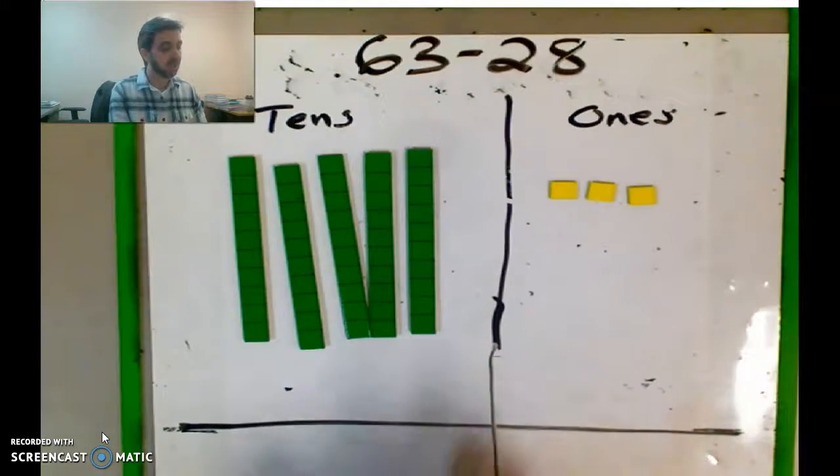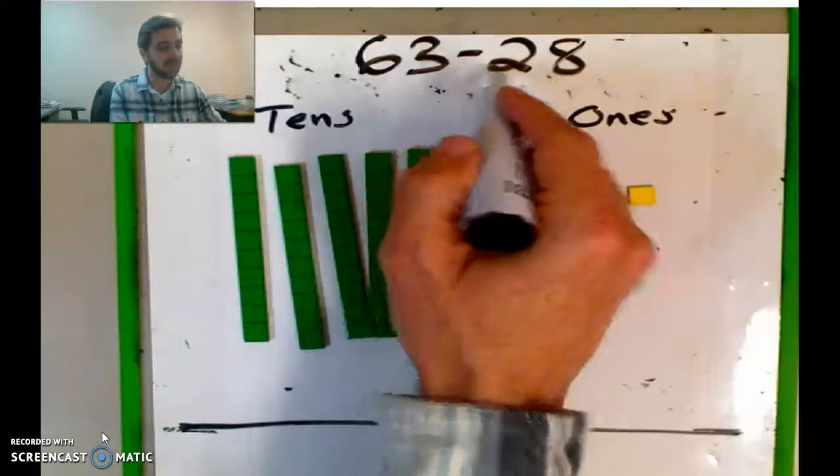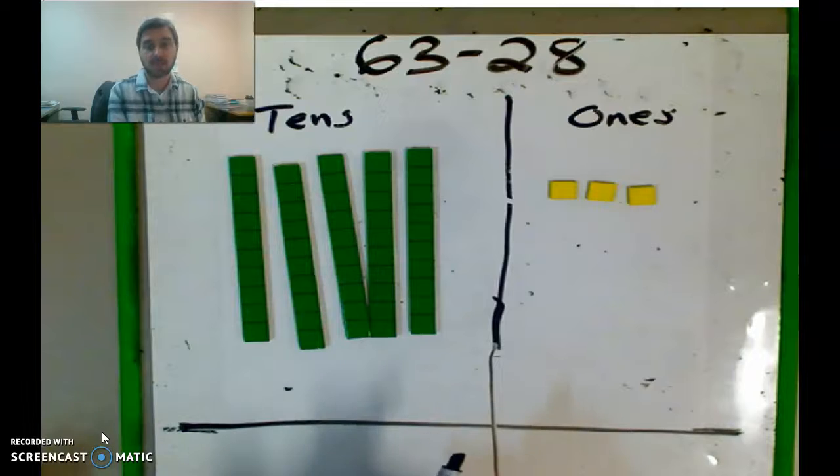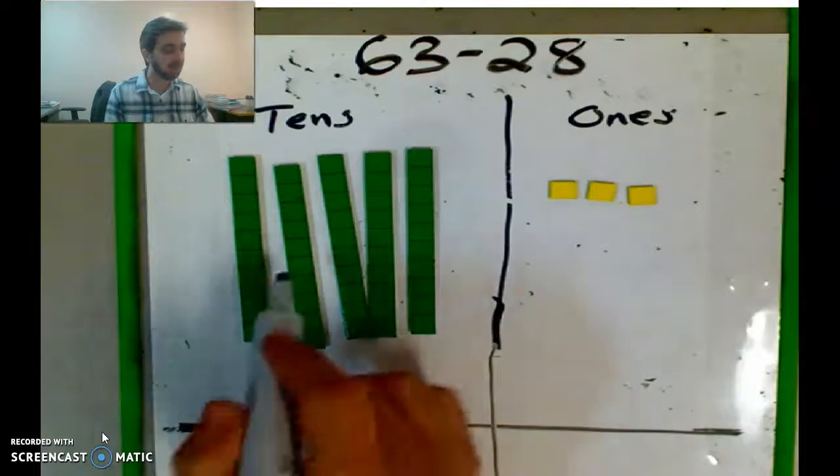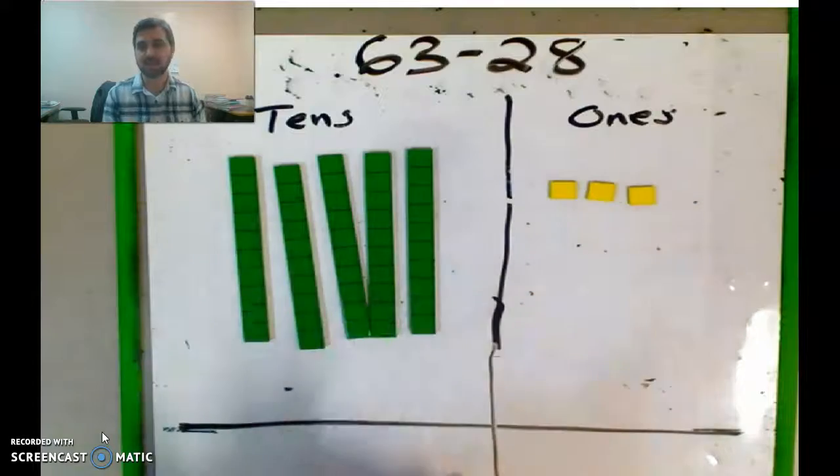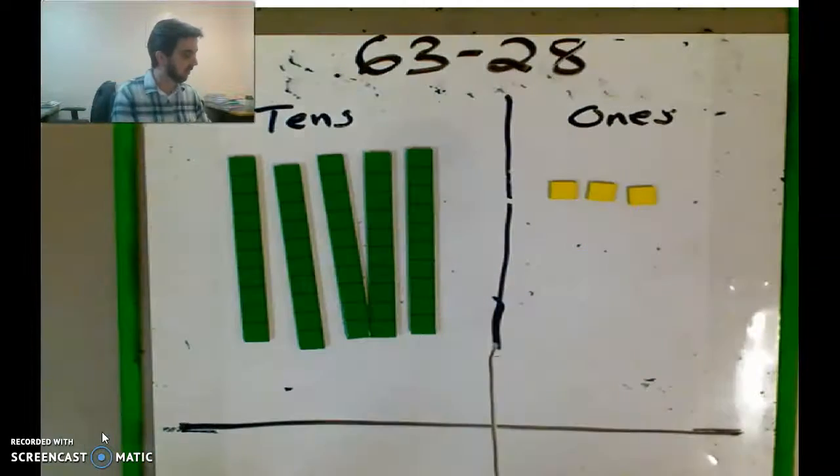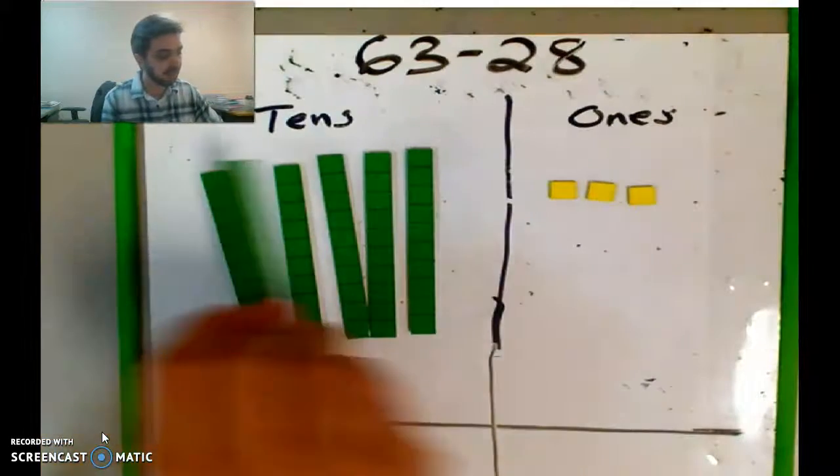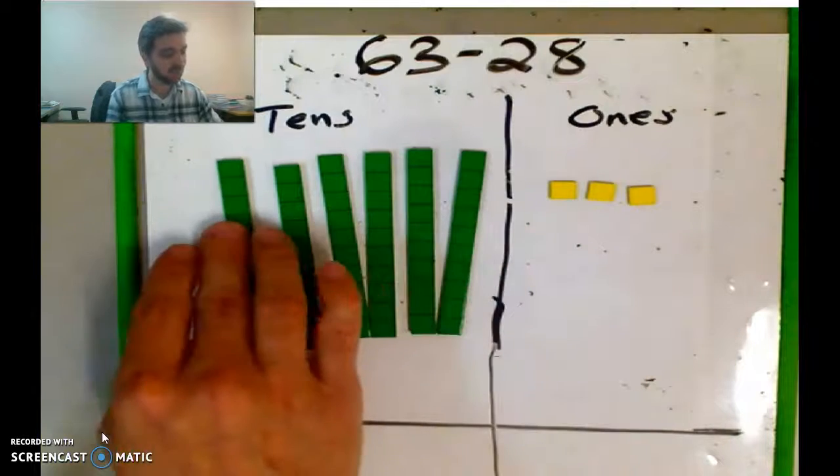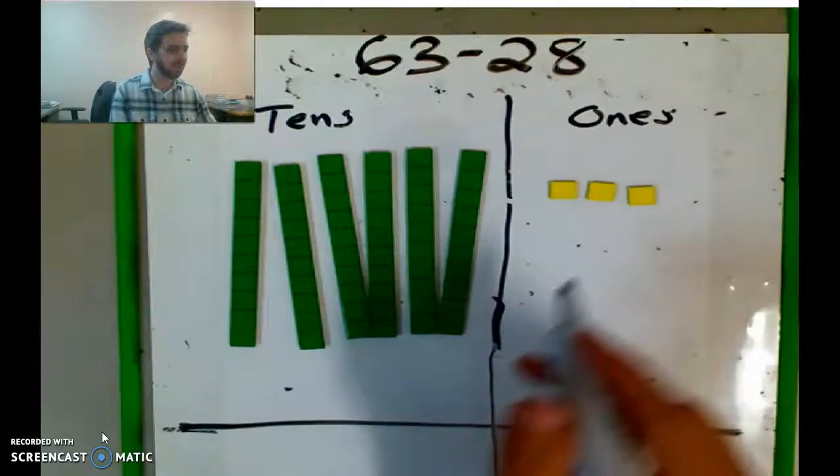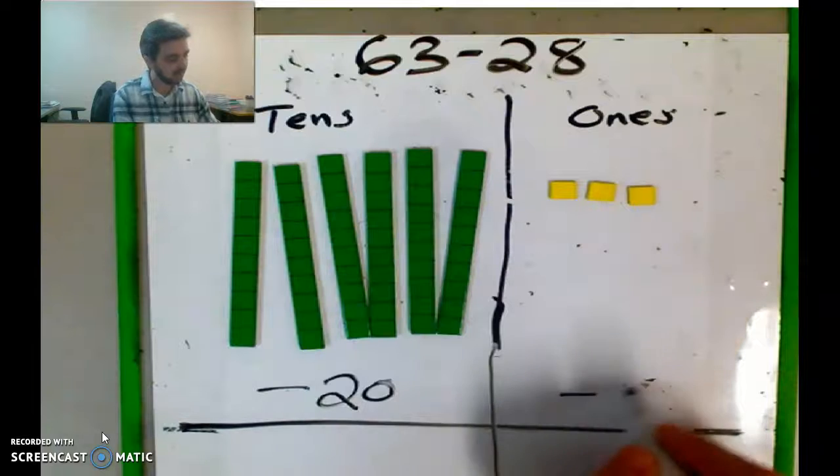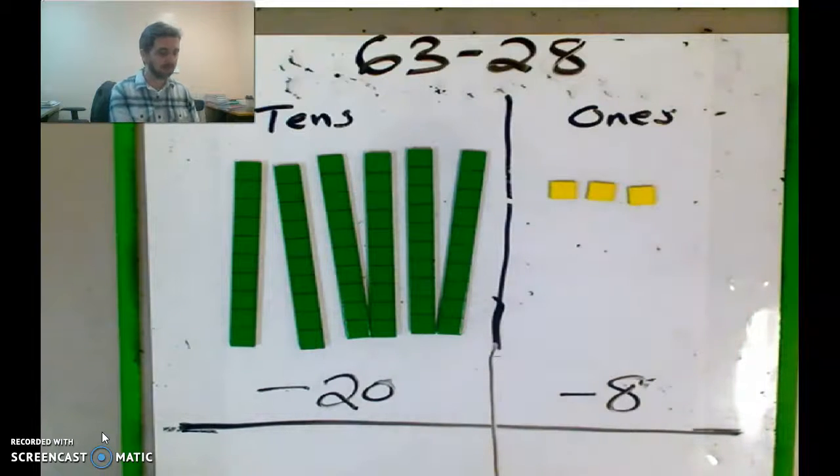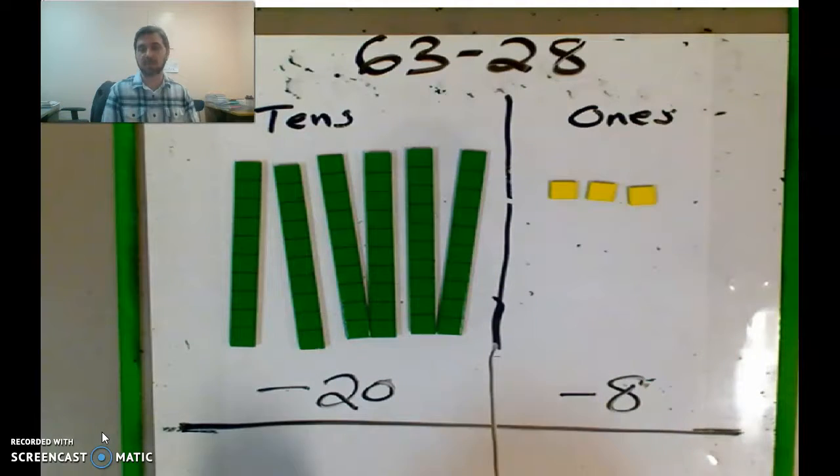Okay, so I've got 63 take away 28. All right, or think of it as the difference between those two numbers. So I'm representing 63 with my base-10 pieces. I've got 10, 20, 30, 40... oh, it's only 50, 60. Mr. McAndrew, you gotta watch. 63. Now I'm going to subtract 28. So if you've already tried it yourself, this is probably what you should have done.